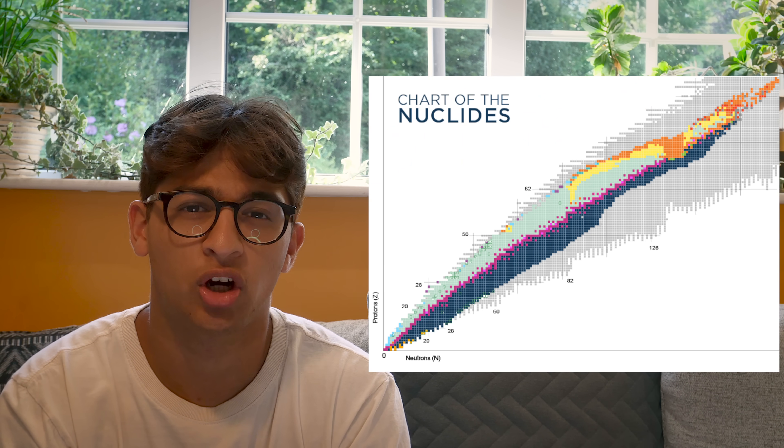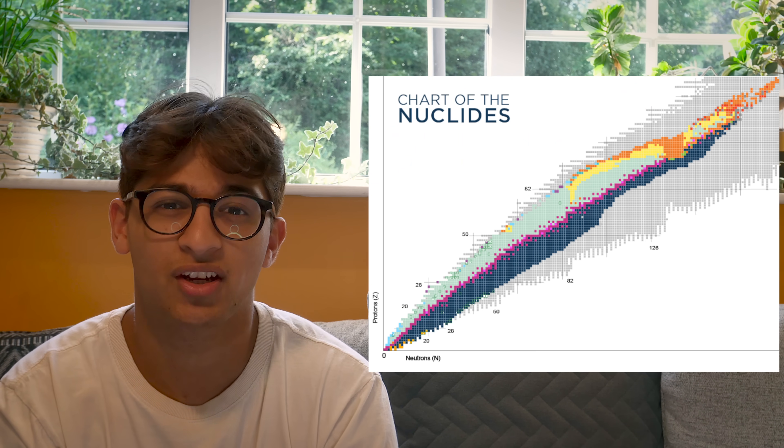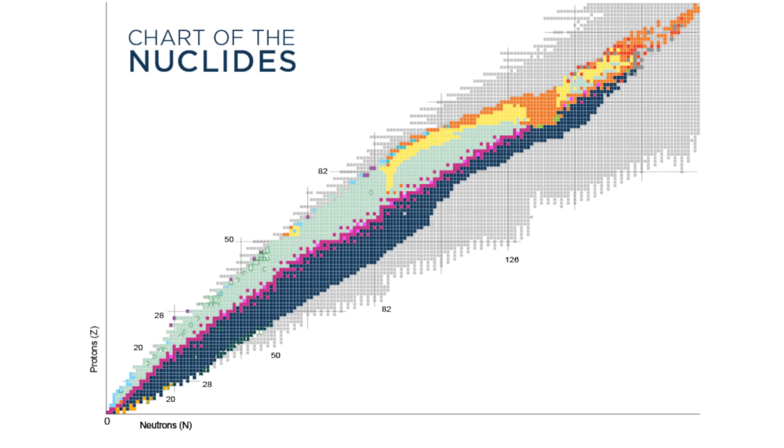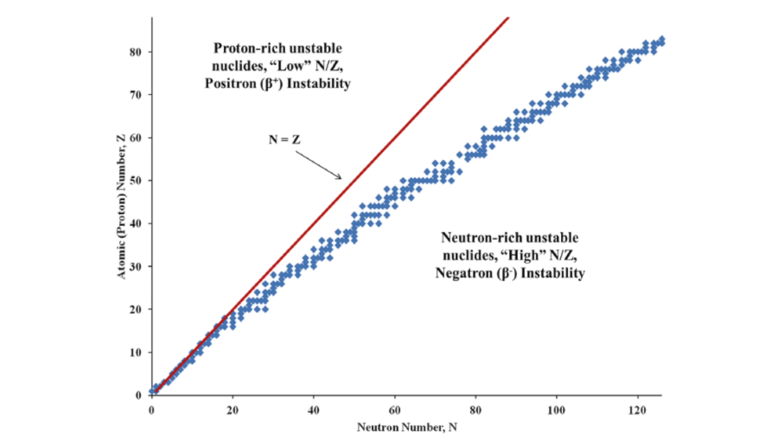The periodic table is organised to reflect the electronic structure of the elements — it shows how the electrons are arranged. During the 1930s, when nuclear science became a reality and the number of known radioisotopes exploded, we began developing what we call the chart of nuclides, which organises the isotopes with proton number Z on one axis and neutron number N on the other.